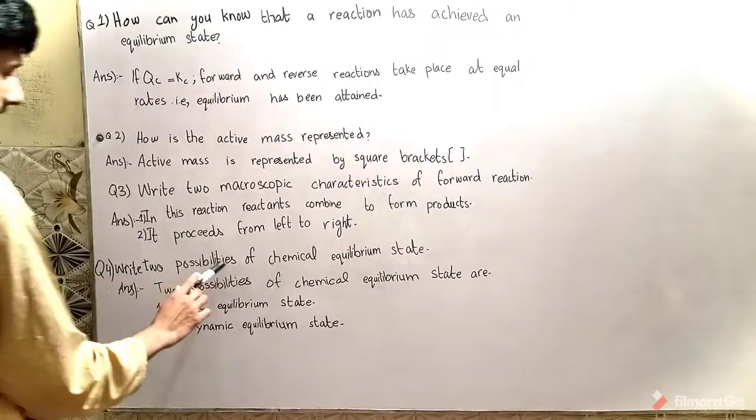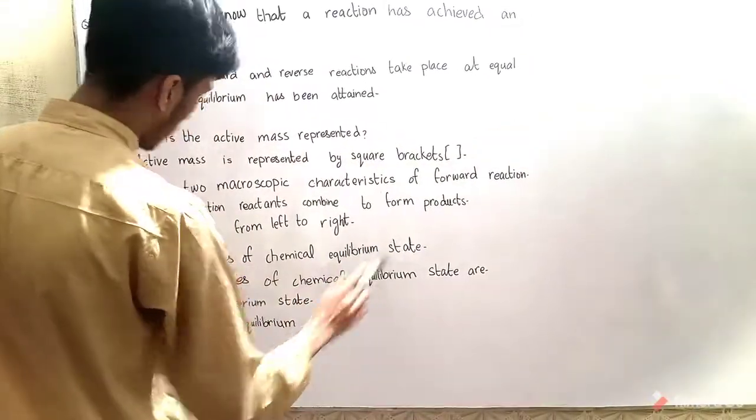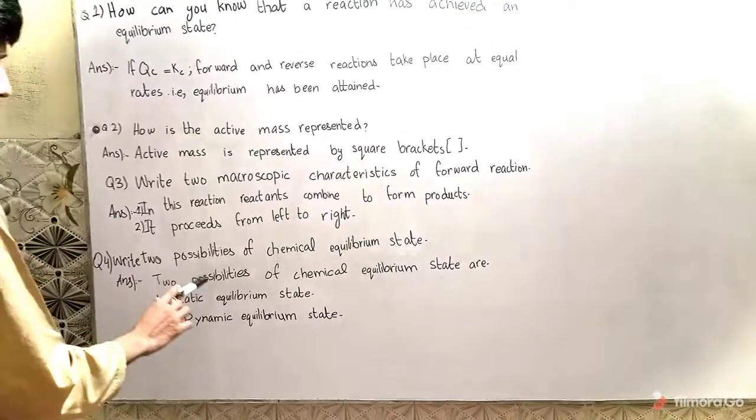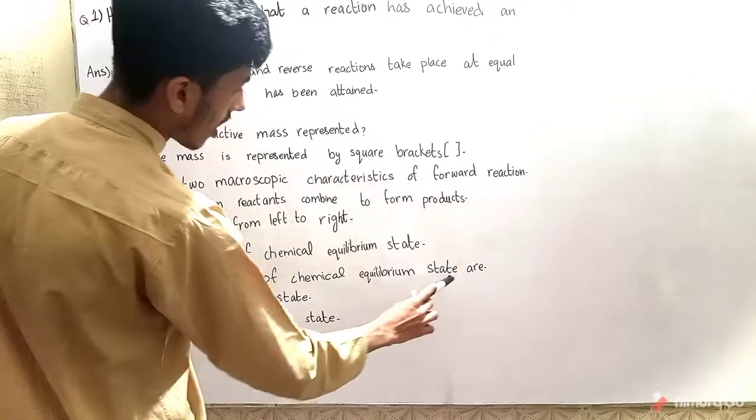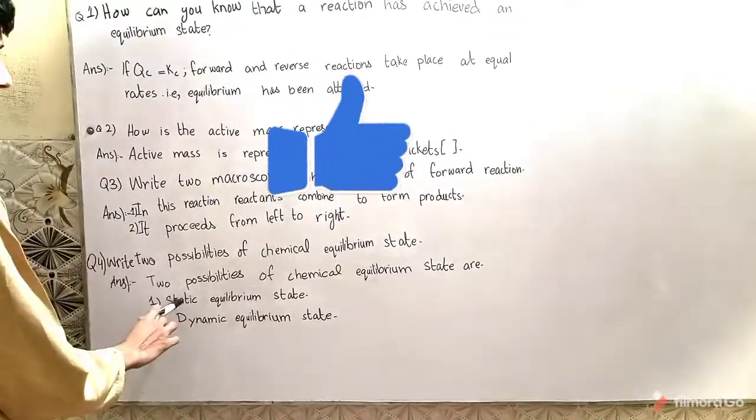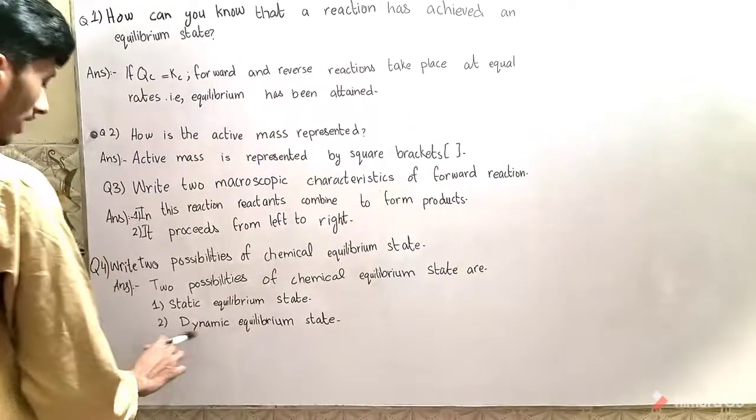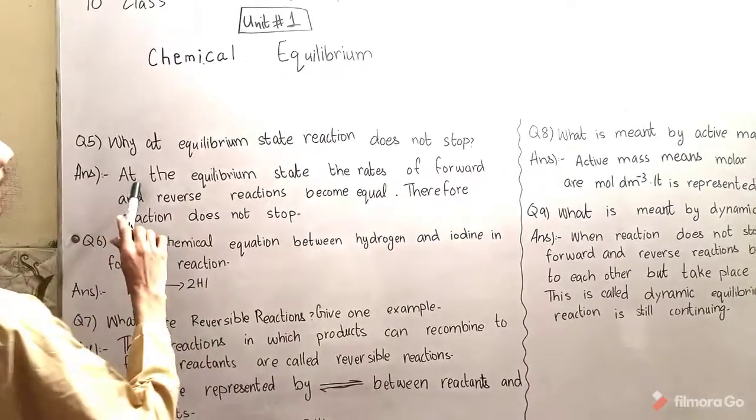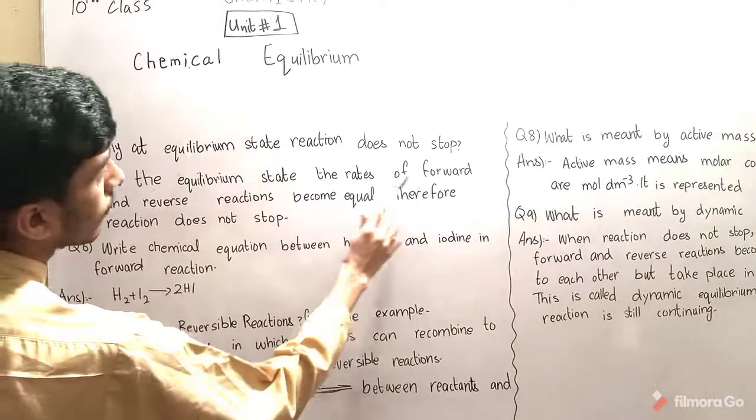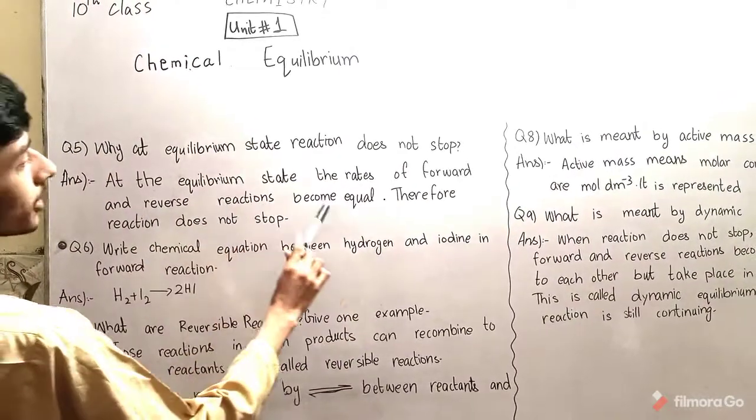Question number four: Write two possibilities of chemical equilibrium state. Answer: Two possibilities of chemical equilibrium state are number one, steady equilibrium state, number two, dynamic equilibrium state. At the equilibrium state, the rates of forward and reverse reactions become equal, therefore reaction does not stop.